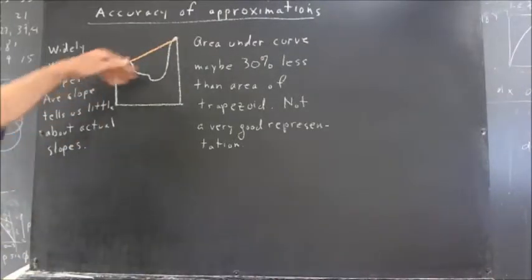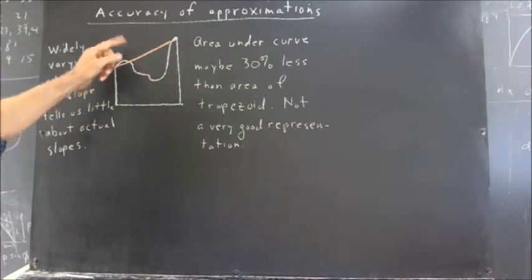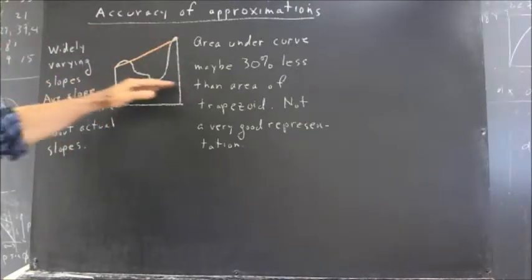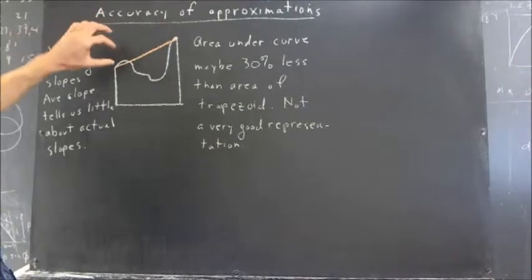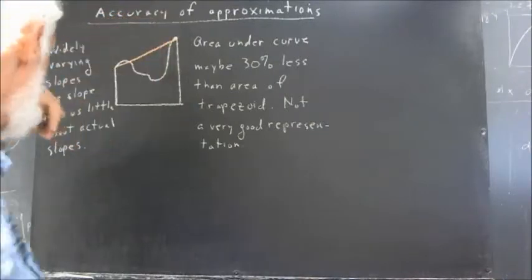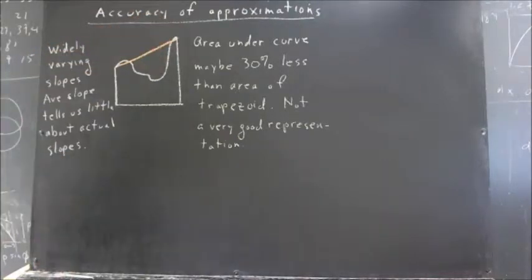I've written down a couple of comments regarding the slopes. My comment is that we have widely varying slopes. The slope is positive here, negative here, pretty steep here, pretty steep here, levels off here. Very little of the actual slope, very few of the actual slopes are anything near the slope of the approximating segment at the top of the trapezoid. The average slope, which is the slope of our approximating segment, tells us very little about the actual slopes. So we're getting very little specific information about how the slopes behave on this interval.